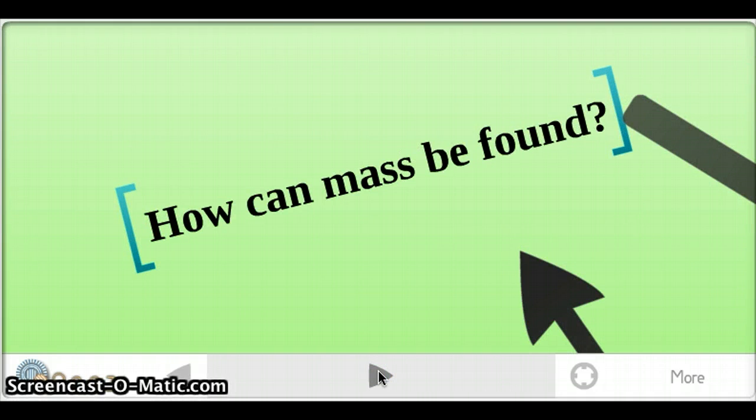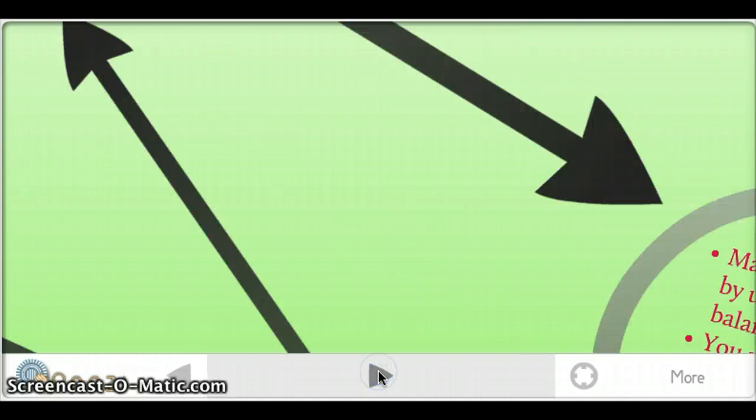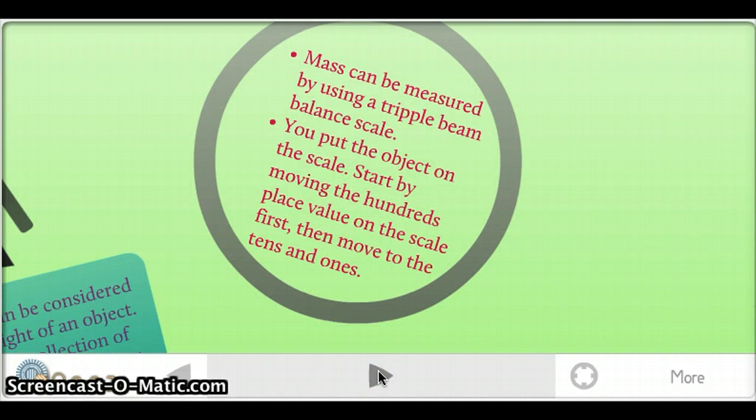How can mass be found? Mass can be measured by using a triple beam balance scale. You put the object on the scale, start by moving the one-hundredths place value on the scale first, and then move the tens and the ones.